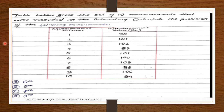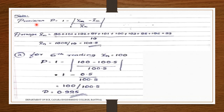One condition: they have not given the expected values. In precision we don't need the expected value; we have a different formula. We take the mean of all values. They have asked to find the precision for the 6th, 8th, 4th, and 3rd readings. The precision formula is: p = 1 minus |x_n minus x̄_n| divided by x_n.